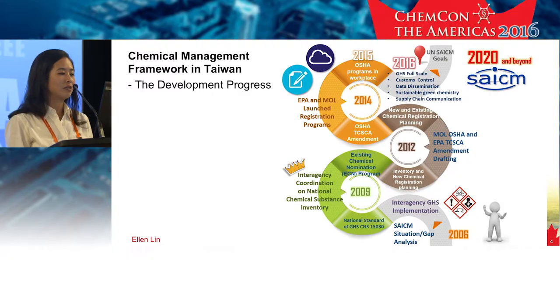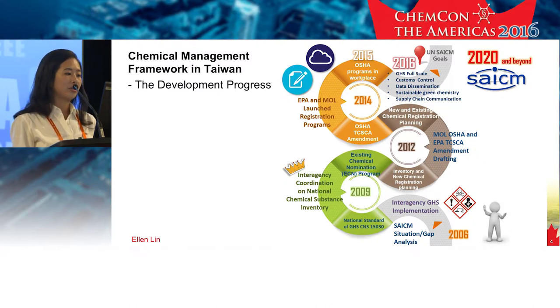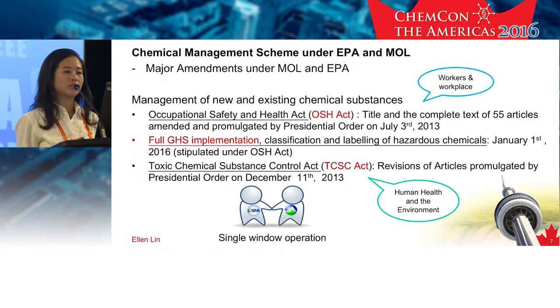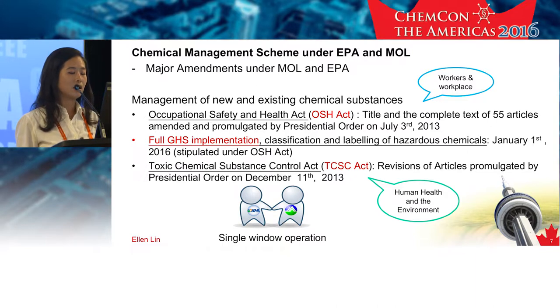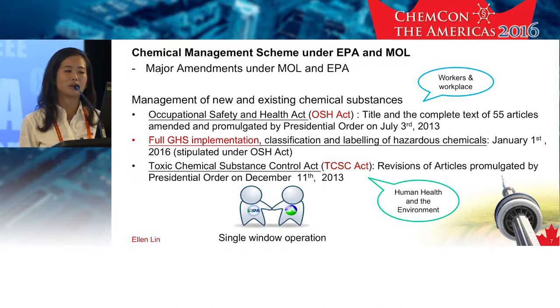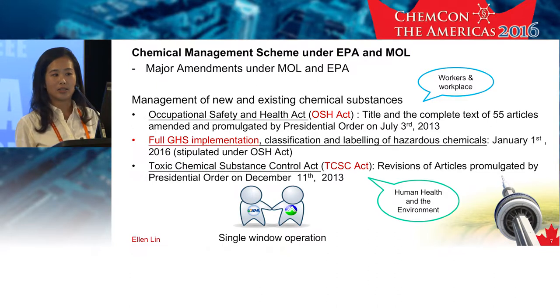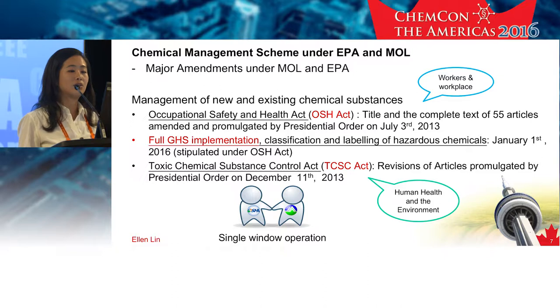CLA or MOL built up the National Chemical Inventory based on the chemical nomination program under an interagency coordination action plan. Taiwan EPA and MOL have both taken part in the chemical management scheme. In order to incorporate the source management idea into the regulatory system in Taiwan, both EPA and MOL have the authority to ask for chemical registration before manufacturing and importing chemicals. EPA has both the new and existing chemical registration scheme, while MOL has the new chemical registration scheme only.